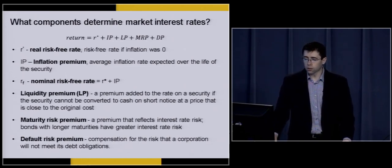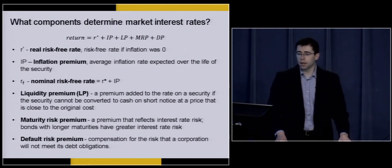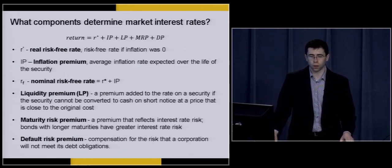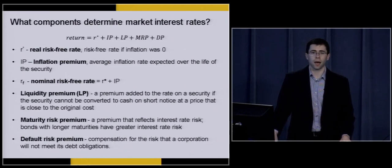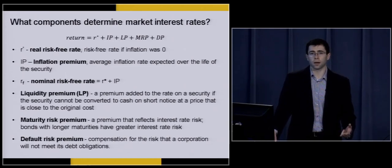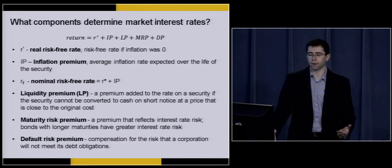The way we control for that is by calculating an inflation premium. This R-star — indicating our real risk-free rate — and IP indicating our inflation premium, the combination of those is sometimes referred to as the nominal risk-free rate. Our nominal risk-free rate in our overall economy is often seen as the one-month T-bill or the one-year treasury bill. We'll come back to that eventually in this course.